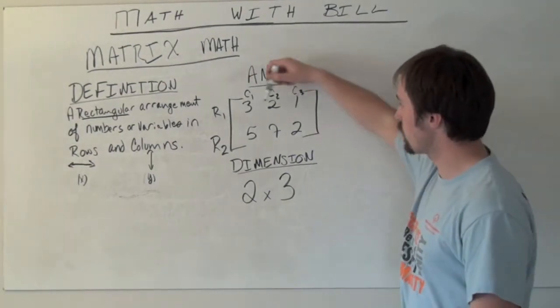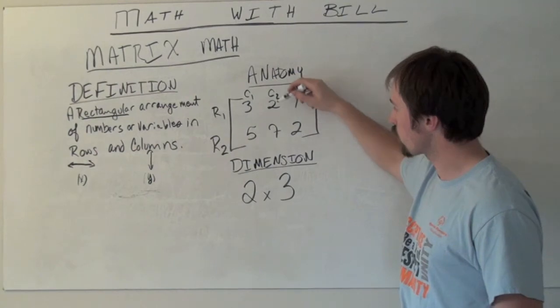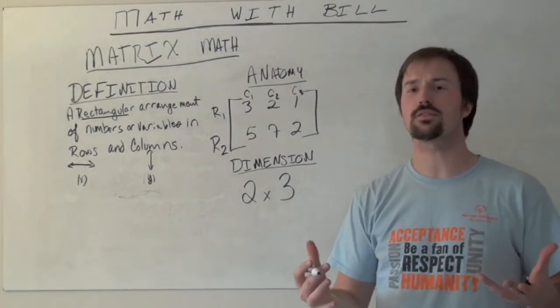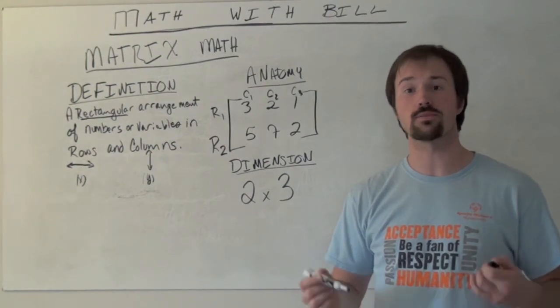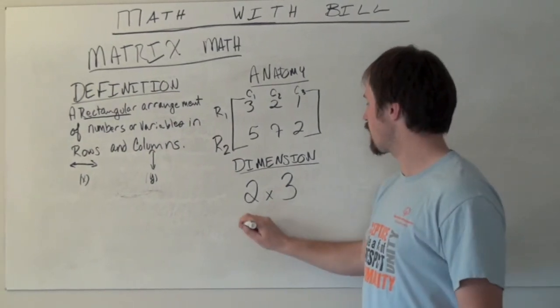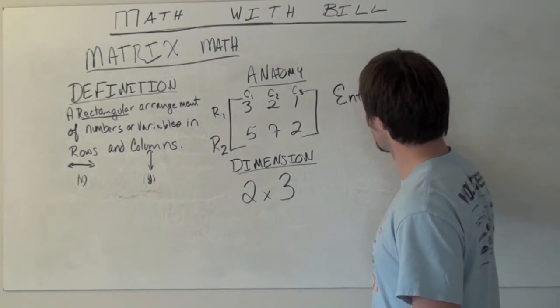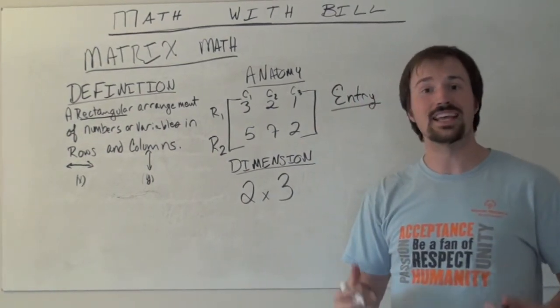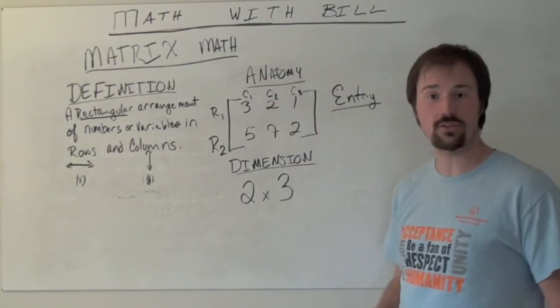As you can see here, we have these different numbers. We have the number 2 occurring twice. And so for us to make sense of which 2 we're talking about when it comes to matrix math, we have to name the entry. And an entry is any specific location within a matrix.